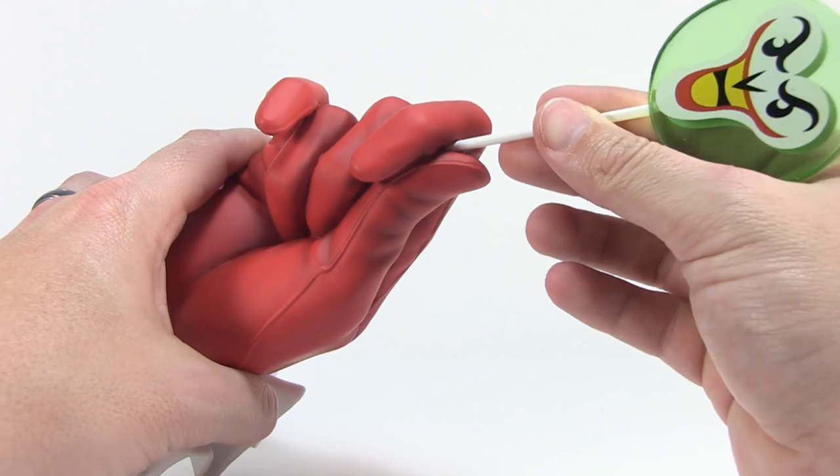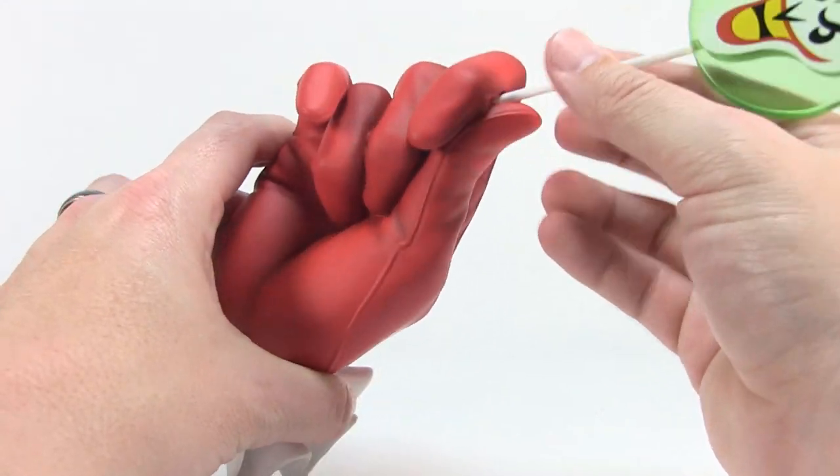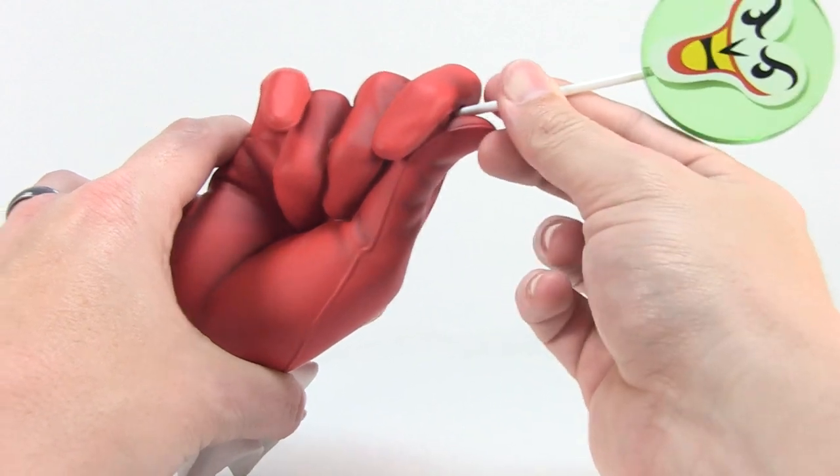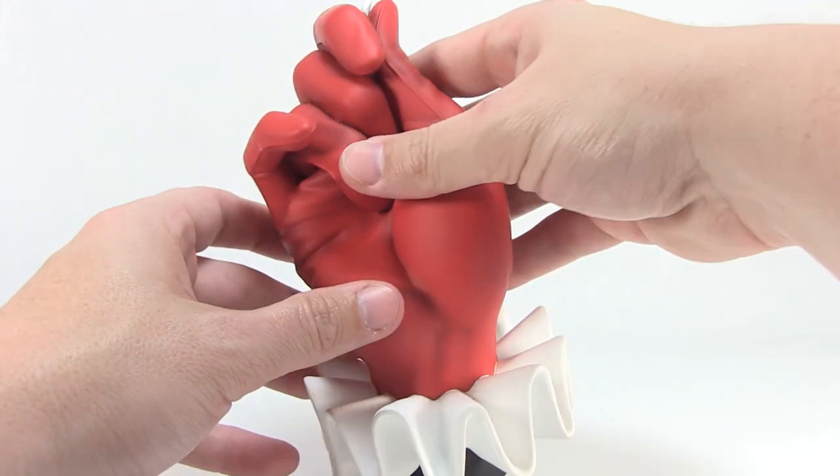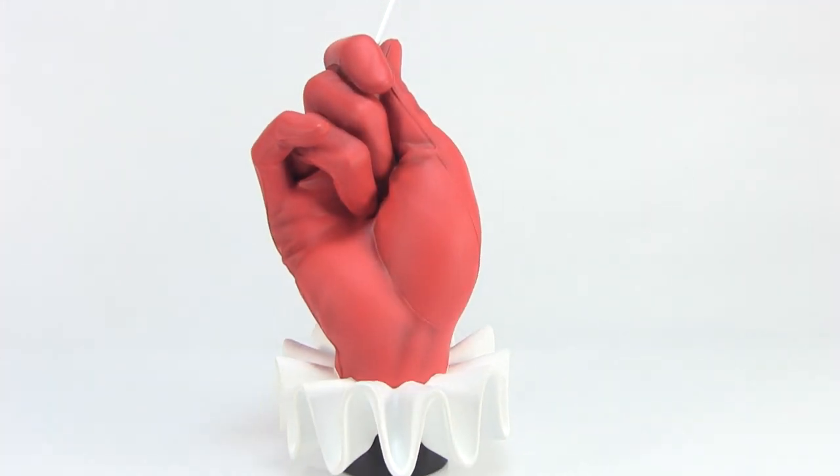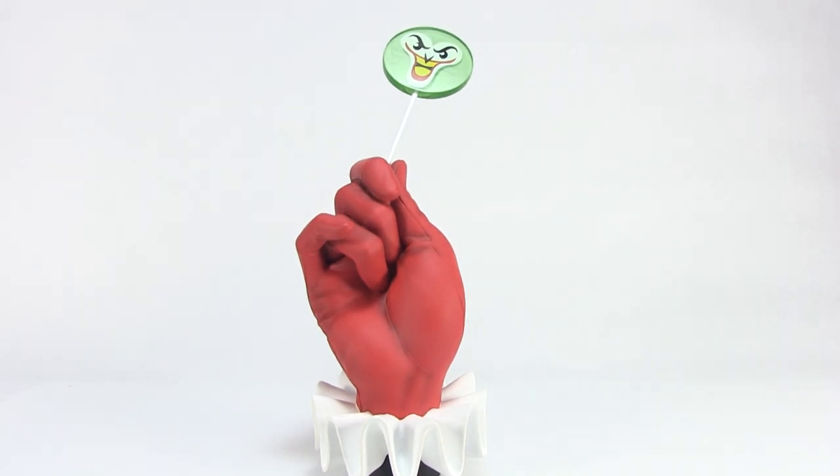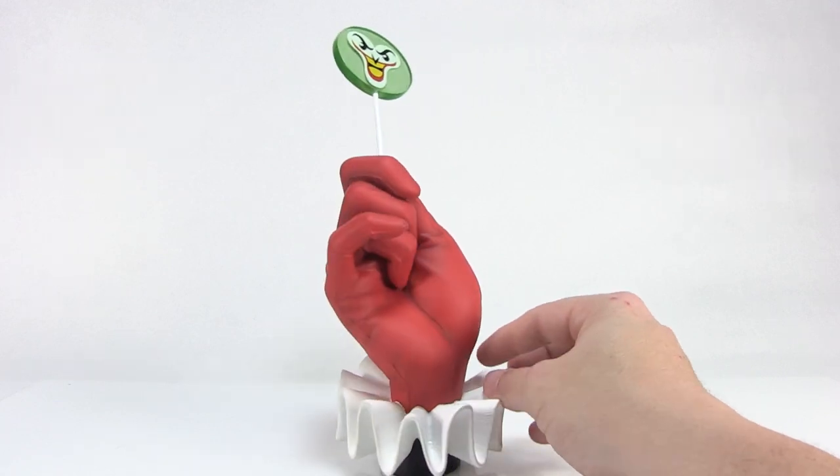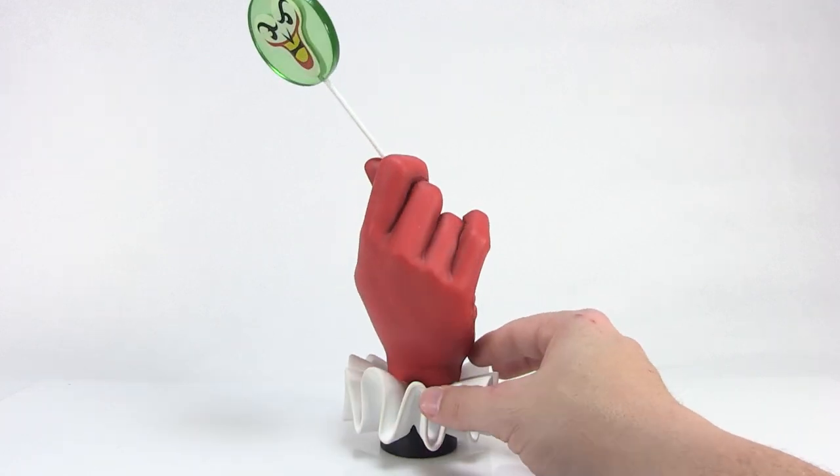There's a little notch here on the top that you can slide this into, and it's slightly slanted to mimic the way fingers would actually be holding this. It actually locks in there pretty nice and solid. So now if we zoom out, we get the full effect of Harley's hand holding on to this Joker lollipop. It's a really cool looking display.